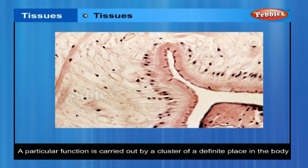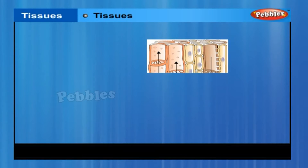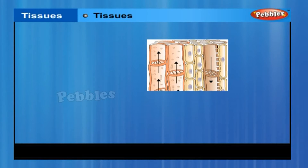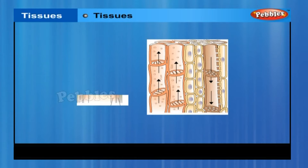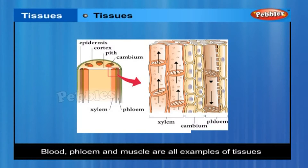This cluster of cells, called a tissue, is arranged so as to achieve the highest possible efficiency of function. Blood, phloem and muscle are all examples of tissues.